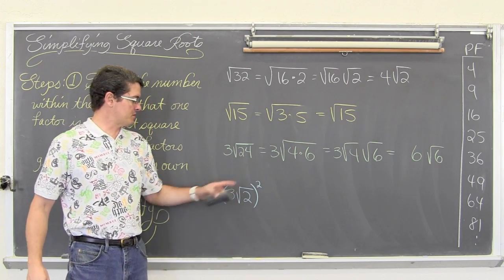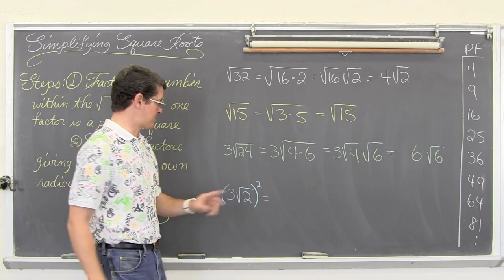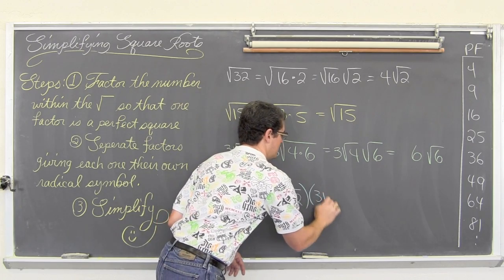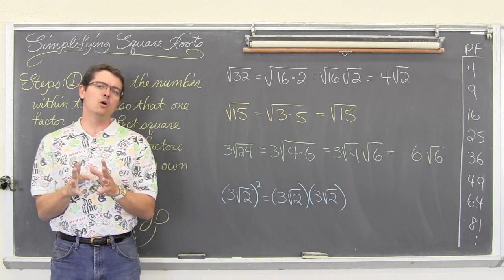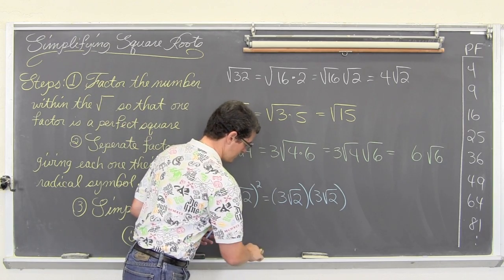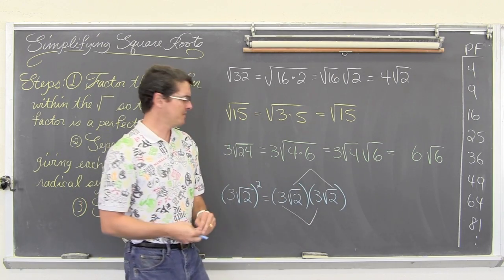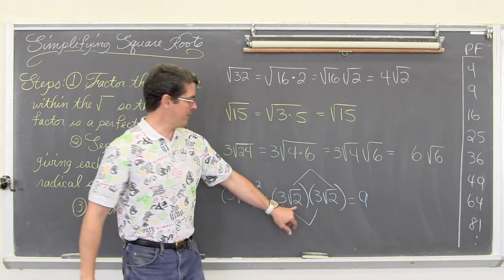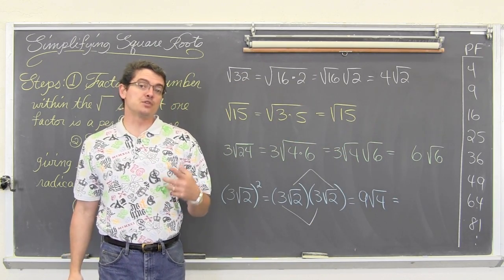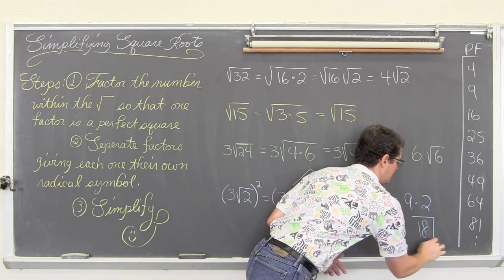For the last example on this slide: three times the square root of two, squared. Anytime you square something you are multiplying it by itself, so three square root of two, squared, equals three square root of two times three square root of two. Putting the leading coefficients together: 3 times 3 equals 9. Putting the square roots together: square root of 2 times square root of 2 equals the square root of 4, and the square root of 4 equals 2. So we have 9 times 2, which equals 18.